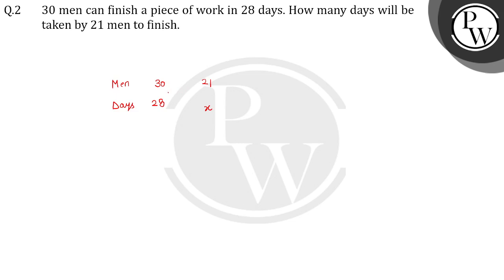We can see here, if the number of persons is less and the same work will be done, then the time will be more. So this is inverse proportion. The formula for inverse proportion is: x1 multiplied by y1 is equal to x2 multiplied by y2, and this is constant.